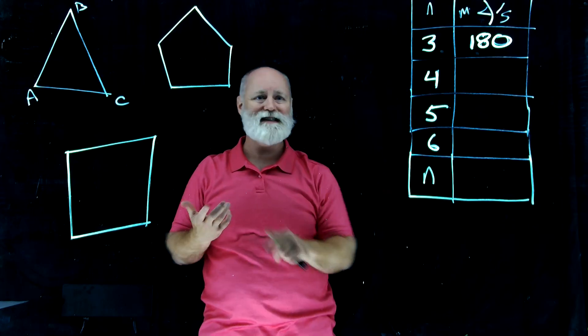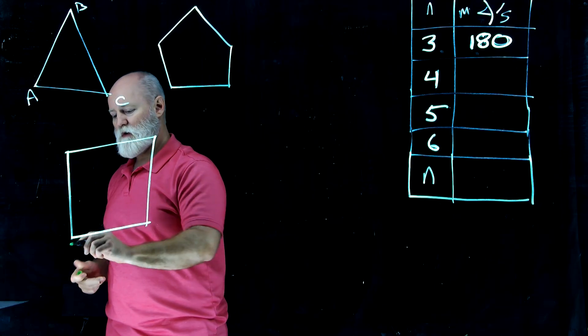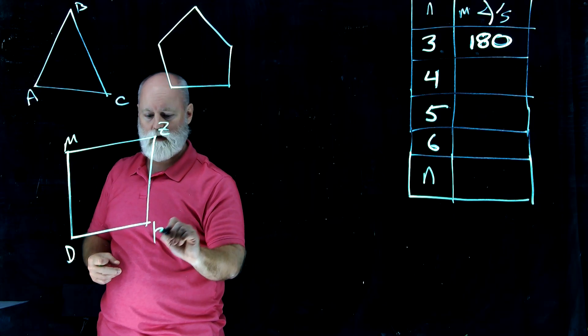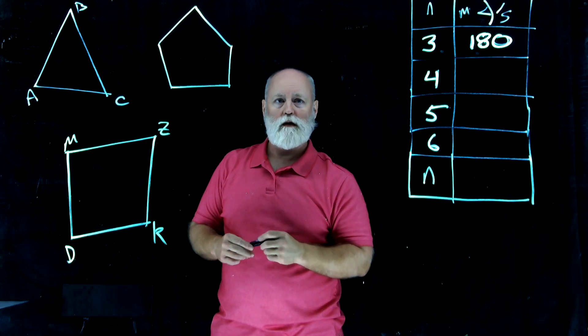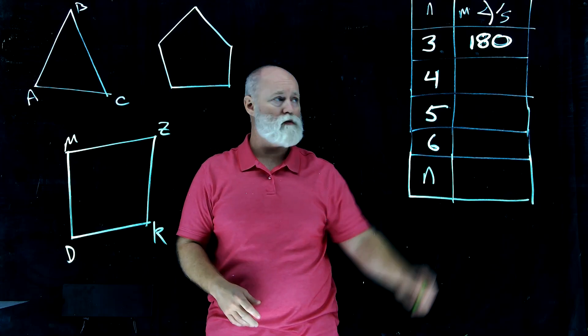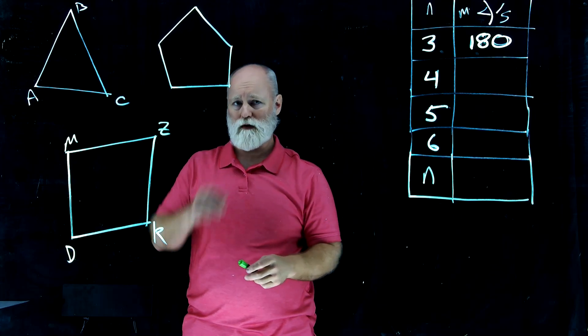We're going to use that idea to build everything else up. So when we talk about this next figure here, let's say this is D, M, Z, and K. What do those four angles add up to? Well, there's a couple different ways we can do this.